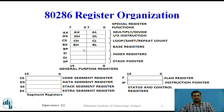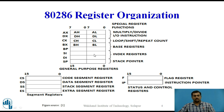These 8 registers serve general purpose functions in the 80286 and also serve some special functions. For example, AX and DX registers are used for multiplication, divide and IO related instructions. The CX register is used to store the count for loop, shift and repeat instructions. BX and base pointer are used as base registers to store the base address, whereas source index and destination index registers are used to store the offset value. Stack pointer register is used for stack related operations.